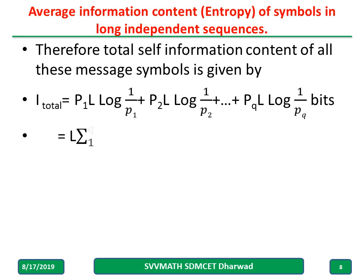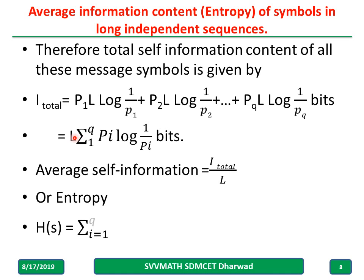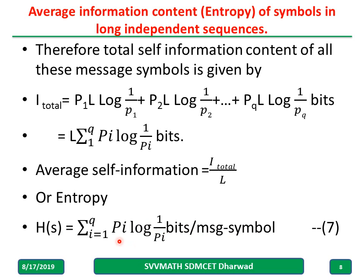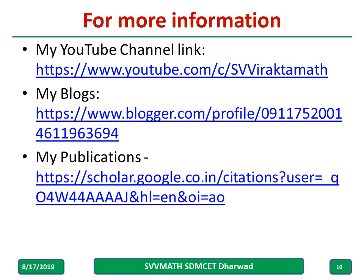Since L is common everywhere, I can take L out and write: I_total = L times the sum of pi·log(1/pi) for i from 1 to q. This is the total self-information. Now to get the average, I divide by the total number of symbols L. The L cancels, and we get: Entropy H(s) = sum of pi·log(1/pi) bits per message symbol, for i from 1 to q. On average we can expect H(s) bits of information per symbol in long messages from the source. H(s) is called the average uncertainty, or also the average amount of surprise of the source.